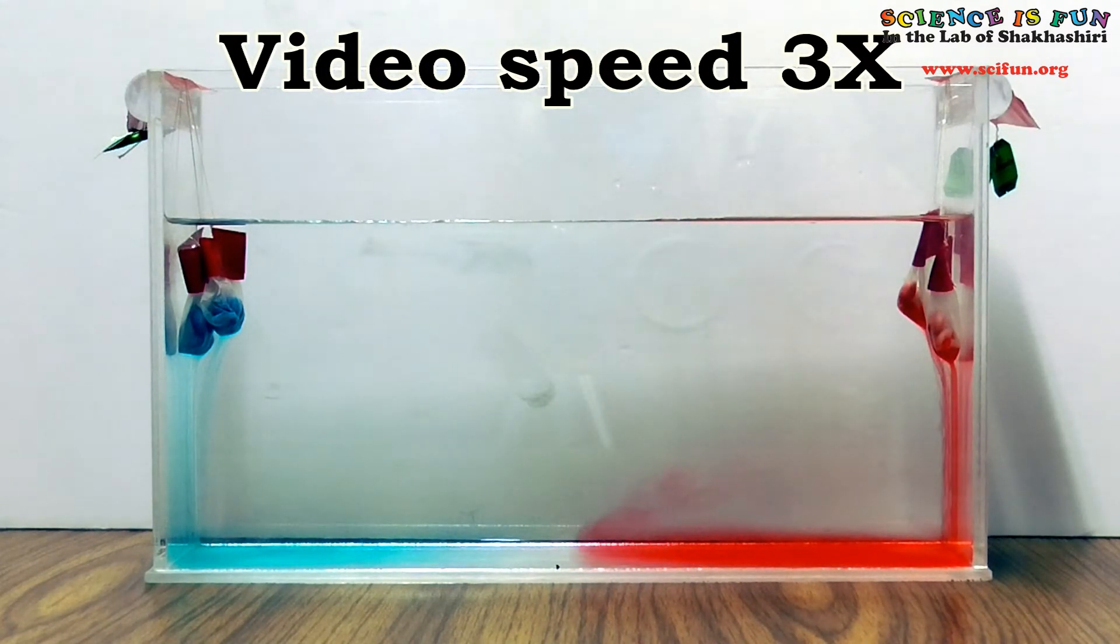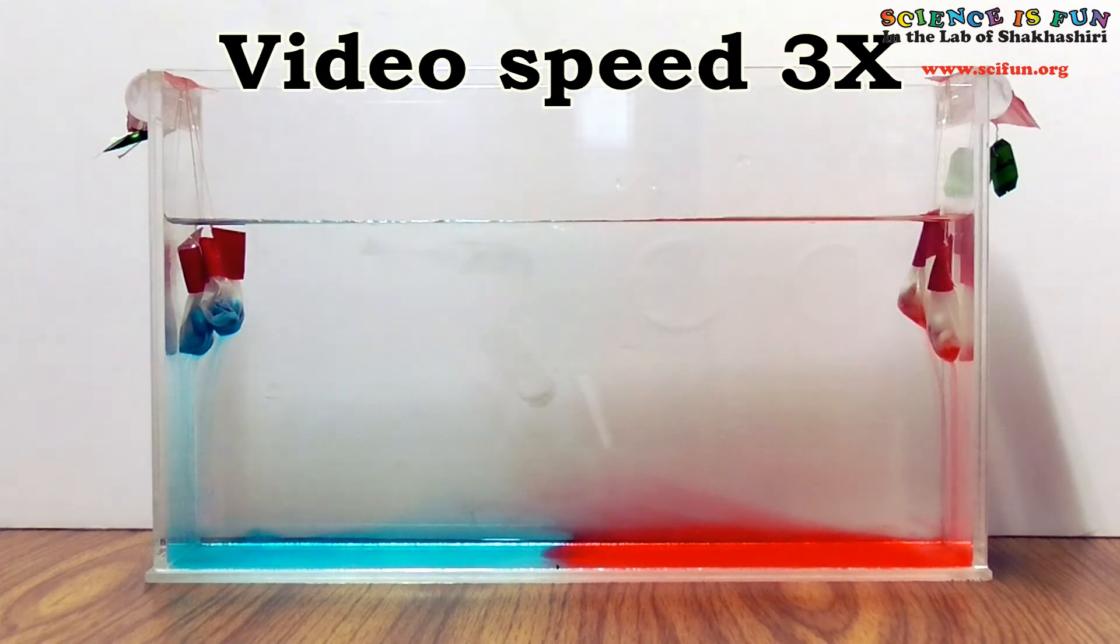The sinking of the sugar water makes sense because sugar water has a higher density than pure water. Because of its higher density, sugar water sinks in pure water, much like a rock sinks in water. Notice that the dispersion of material doesn't continue as freely once the red and blue regions meet each other.